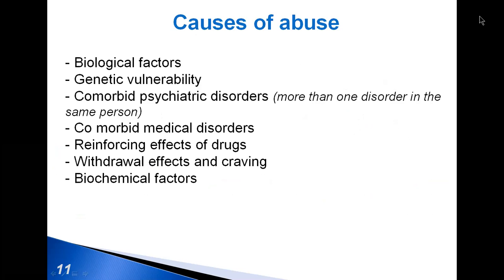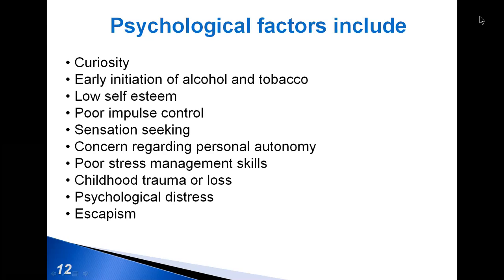Physical and psychological dependence and abuse may be caused by biological and biochemical factors, genetic vulnerability, comorbid psychiatric and medical disorders, and reinforcing effects of drug withdrawal. Psychological factors of abuse include curiosity, low self-esteem, poor impulse control and stress management skills, and childhood trauma or loss.